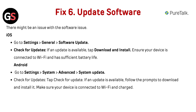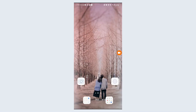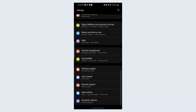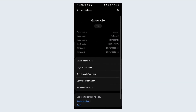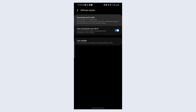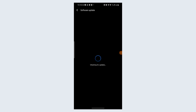Fix 6: update software. There might be an issue with outdated software. For iOS, go to Settings, then General, then Software Update, and check for updates. If an update is available, tap Download and Install. Ensure your device is connected to Wi-Fi and has sufficient battery life. For Android, go to Settings, then System, then Advanced, then select System Update. Tap Check for Update, and if an update is available, follow the prompts to download and install it. Make sure your device is connected to Wi-Fi and charged.